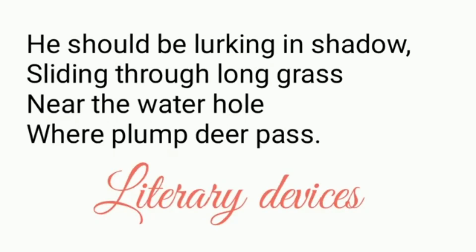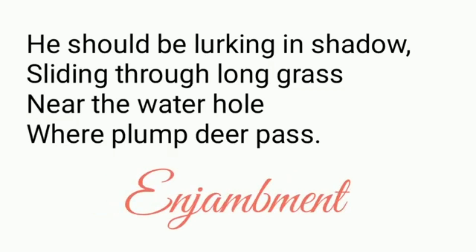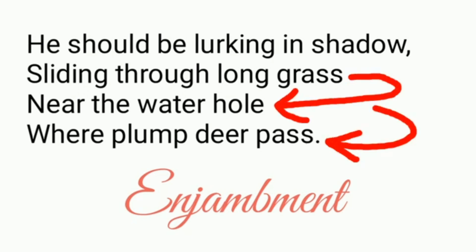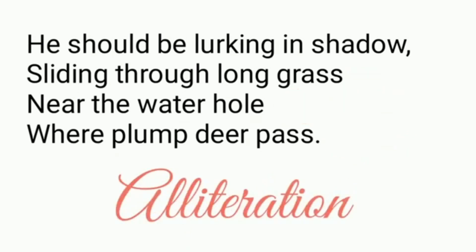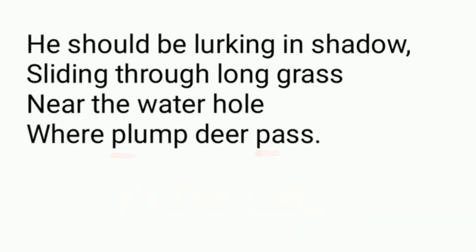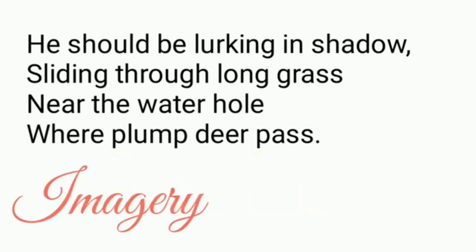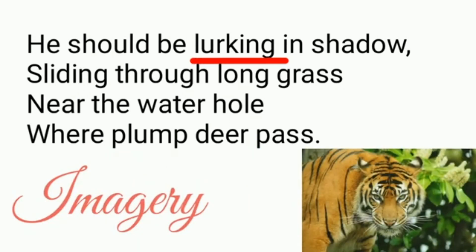Now we can move to the second stanza. He should be lurking in shadow, sliding through long grass, near the water hole, where plum deer pass. Here one literary device is evident — enjambment, repeated in the second and third lines. Then we have alliteration in the last line — 'plum and pass,' where the sound 'p' is repeated. Imagery is also used by the poet to depict the activities of the tiger.